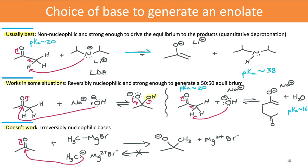In some situations, a reversibly nucleophilic base can be used. That nucleophilic reaction is reversible, enough of the conjugate base is generated that we can get, as long as there's an electrophile present, we can get a reaction in the forward direction.